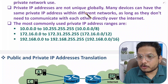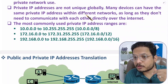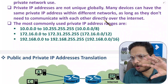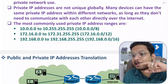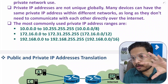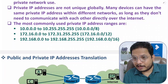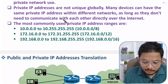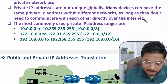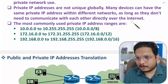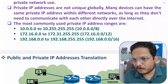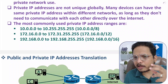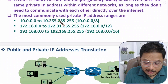Private IP addresses are not unique globally — they can be reused by anyone. Many devices can have the same private IP within different networks. A private IP that is used in one LAN cannot be reused within that same network, but it can be reused in a different local area network. As long as those LANs don't need to communicate with each other directly over the internet — since they communicate via router — private IP conflicts will not happen.